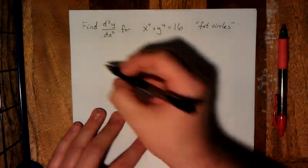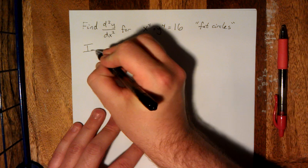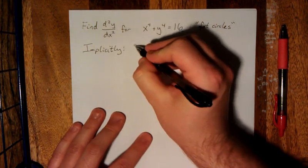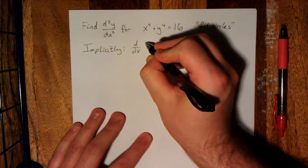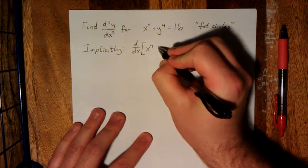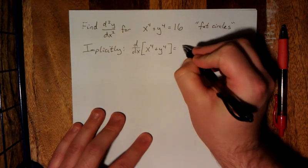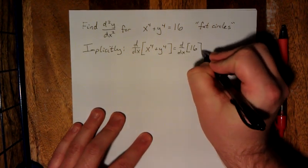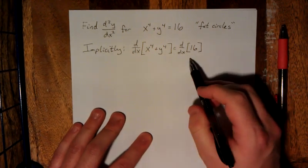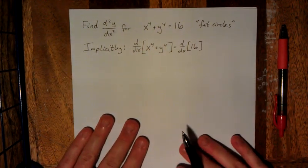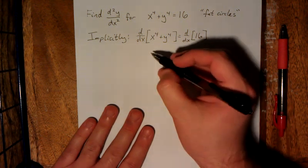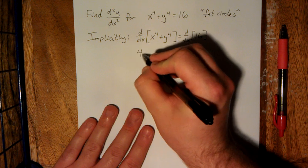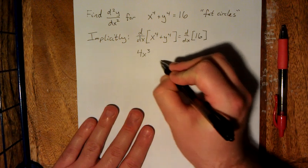What we're going to do is differentiate implicitly. So we're going to start by simply taking a derivative of both sides. We take the derivative with respect to x of the left-hand side, which is x to the fourth plus y to the fourth. Derivative of the right-hand side would be the derivative of 16. So from here, since we're taking a derivative with respect to x, x to the fourth is going to be simply power rule, 4x cubed.